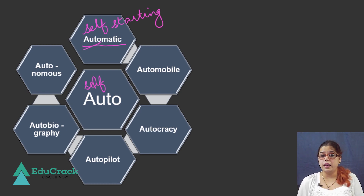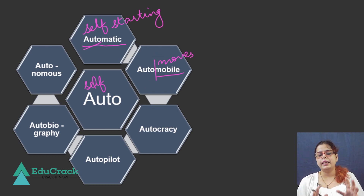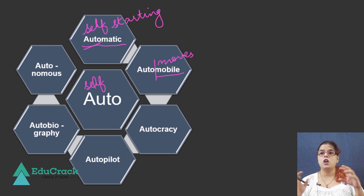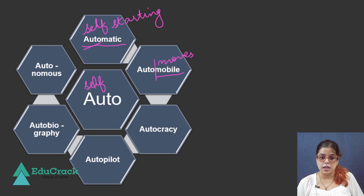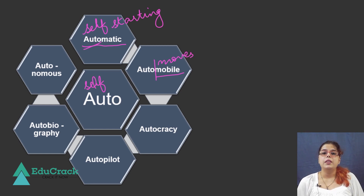Then we have automobile. Now what is the meaning of the word mobile? Mobile means something which moves. Auto means self — something that moves on its own. Technically they do not move on their own; they need fuel. But at least automobiles are not pulled by somebody or something like a camel, a cow, or an ox. They move forward on their own using fuel, but they do not need an external pull or push to move. That is why they are called automobiles — something that moves by itself.